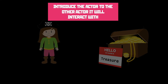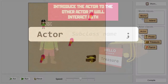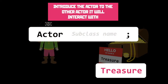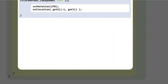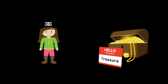What we need to do is introduce the pirate to the treasure so they can interact. The way we do this is by letting the object know what type of object it needs to know about. In our case we need to let the pirate know it will be interacting with a treasure object, and we get this from the subclass name — it has to be identical, capitalization included. We pop that into the code and we've told the pirate it will be interacting with treasure.